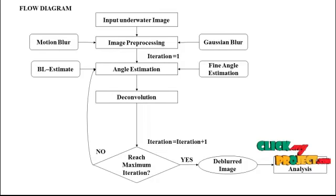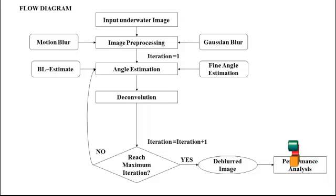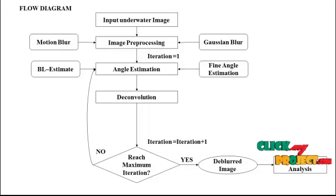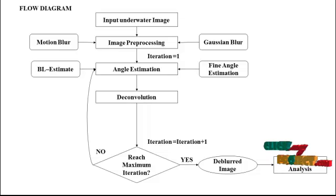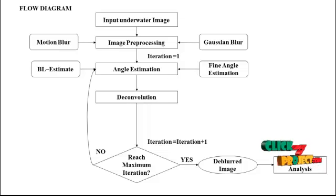The project flow diagram is to remove the blur from underwater images. Initially, we collect the dataset for our process. Next, we choose any one input image to process. Then, we apply the preprocessing method, which adds motion and Gaussian blur to our input image. Then, we initialize the iteration equal to 1 before deblurring our image.